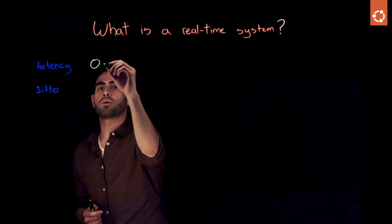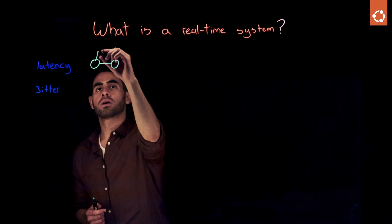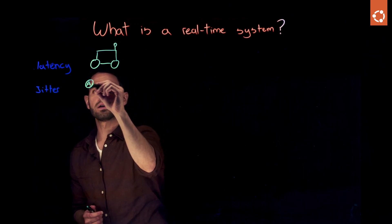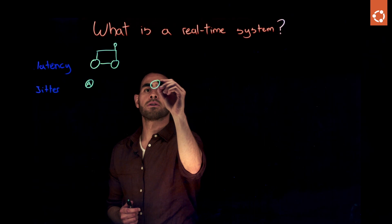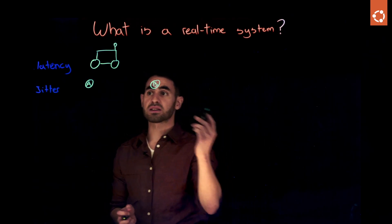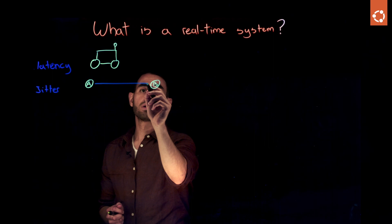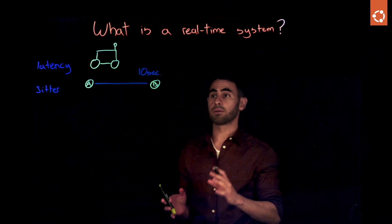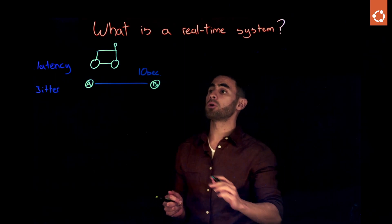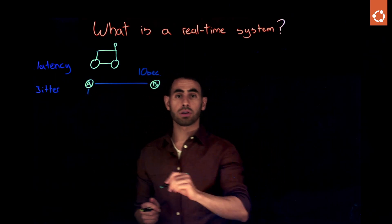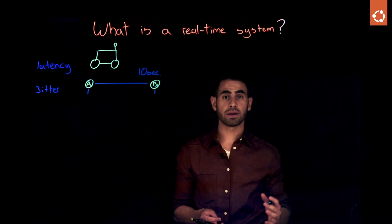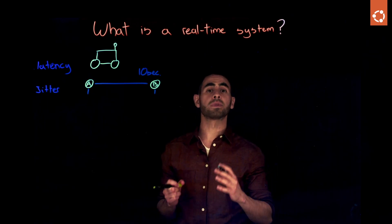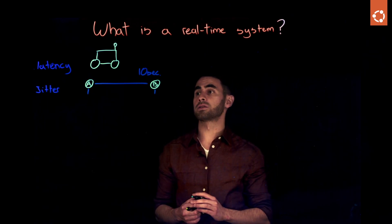Let's say that we have a robot that is moving from point A to point B and it takes the robot 10 seconds to complete that operation. From the moment that we call the activity to the moment that we complete the activity, we can define that as latency, the time that it takes for a process to complete its function.